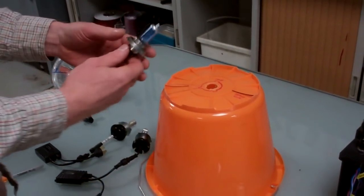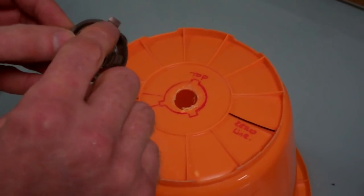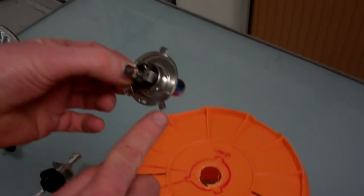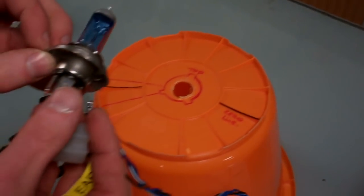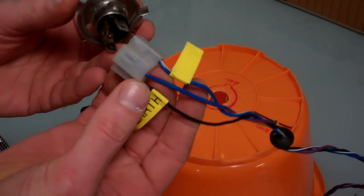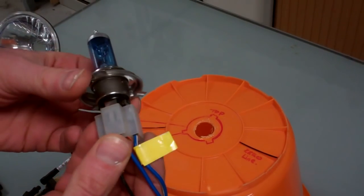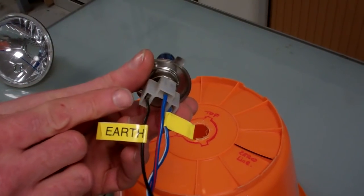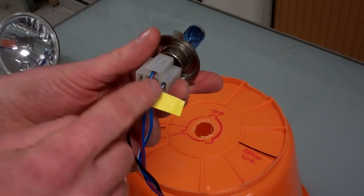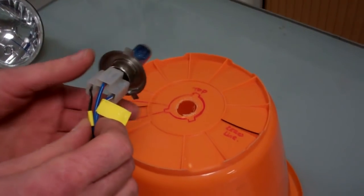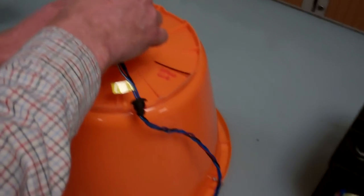On an H4 bulb, the top pin is the fatter pin and these two are the smaller ones, so we know it goes that way up. It's got three connections. This connection here is the common, sometimes it's the negative, sometimes it's the positive, and then these two are your main and dip beam signal. We're going to put that in the bucket.